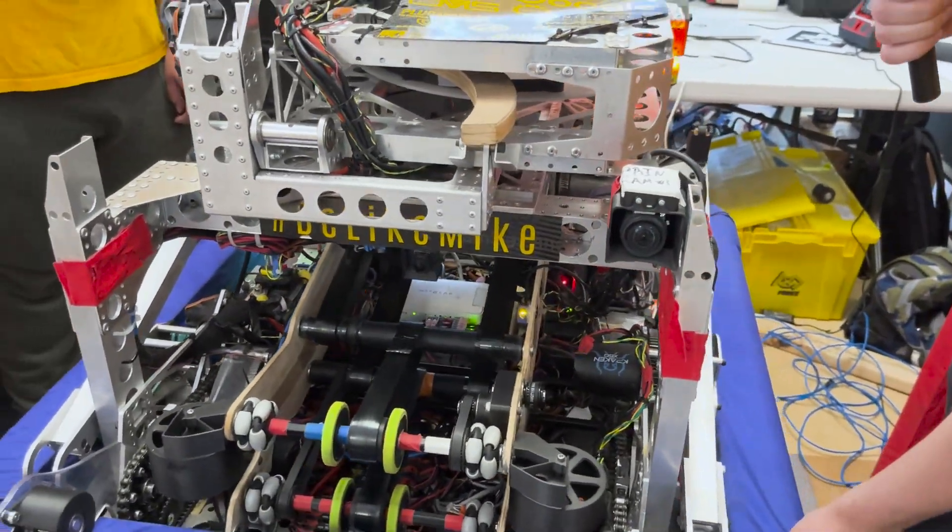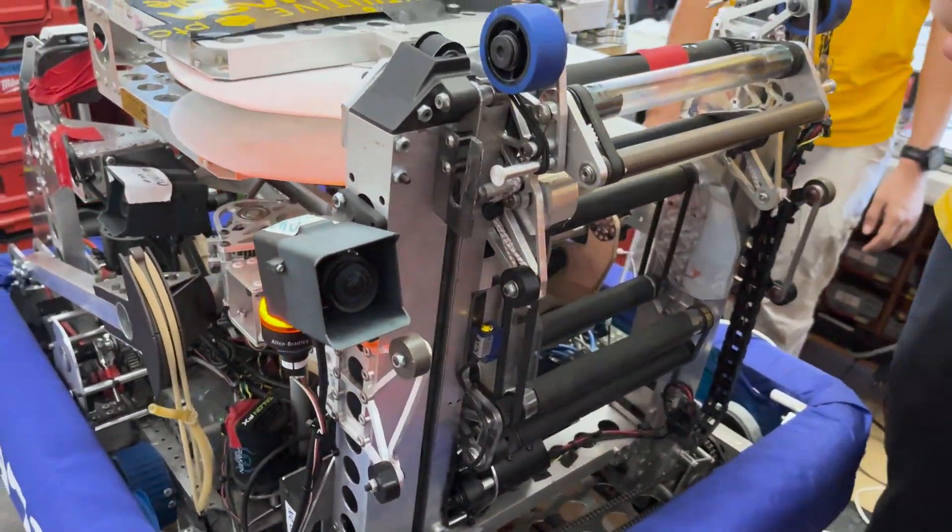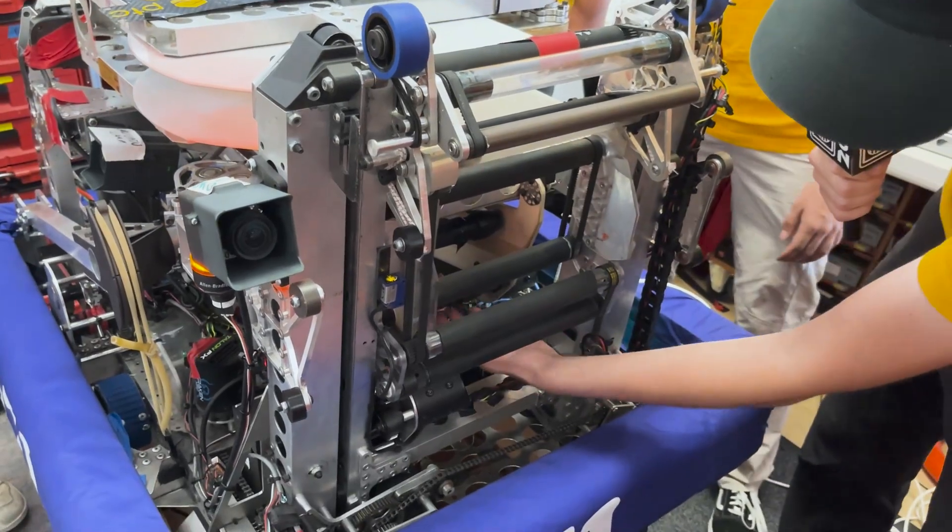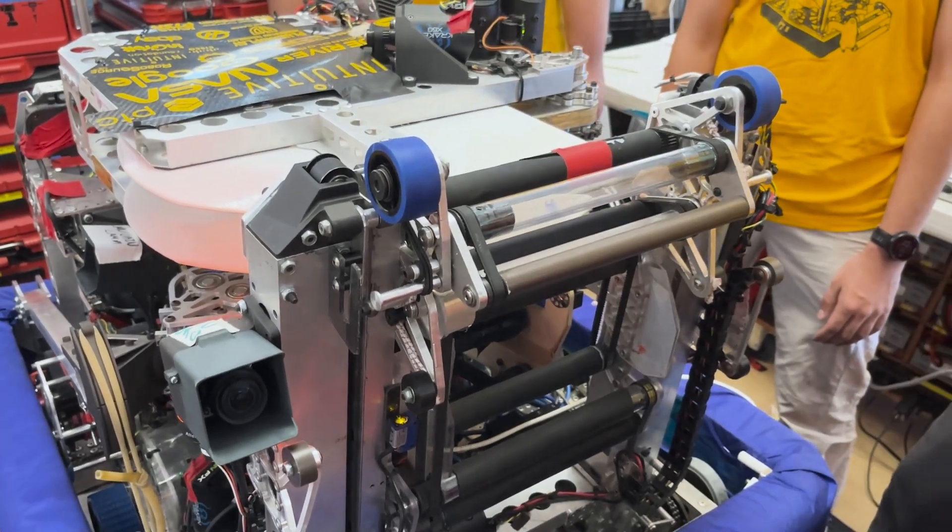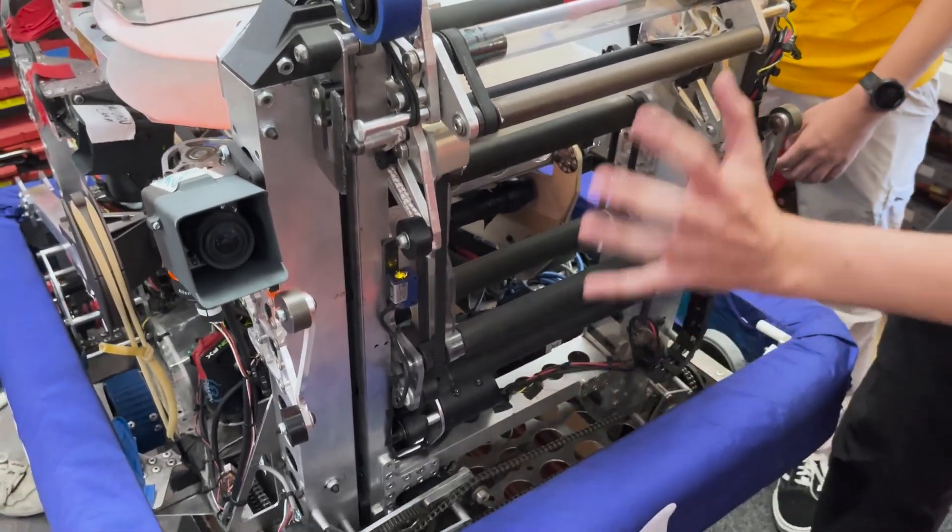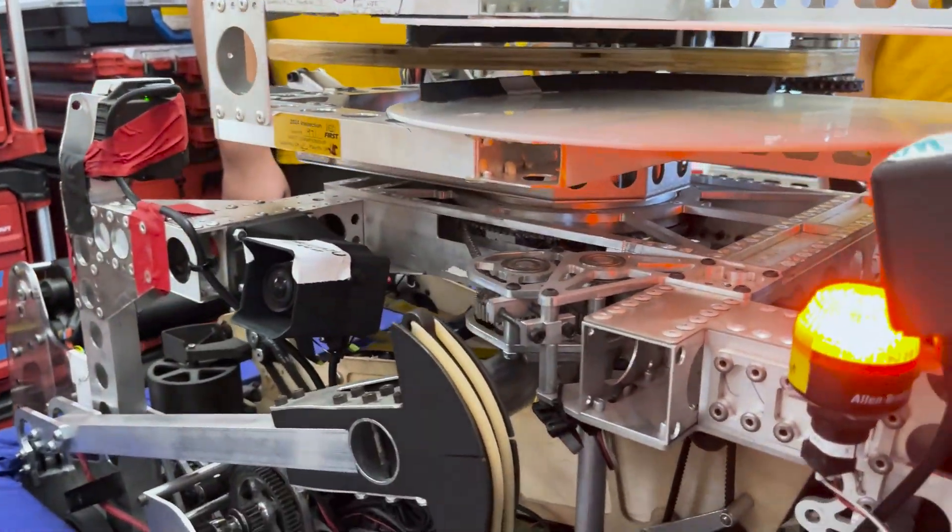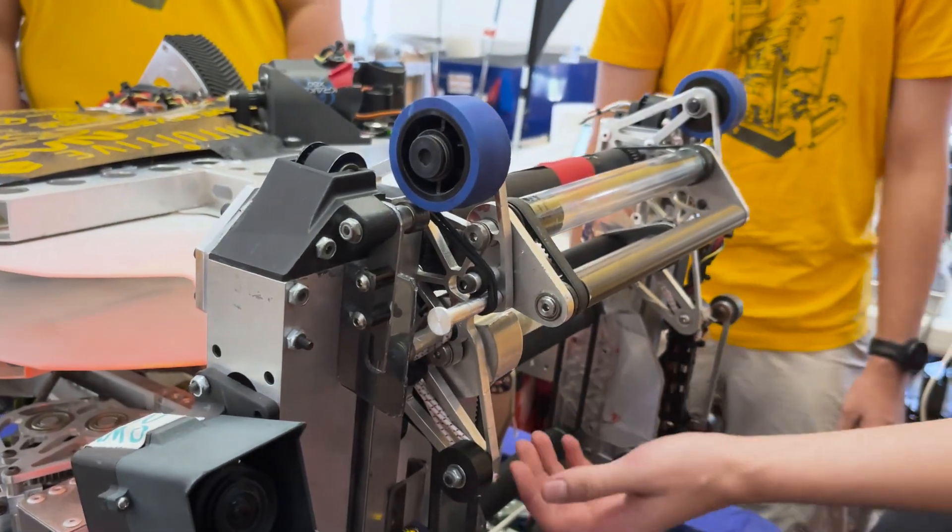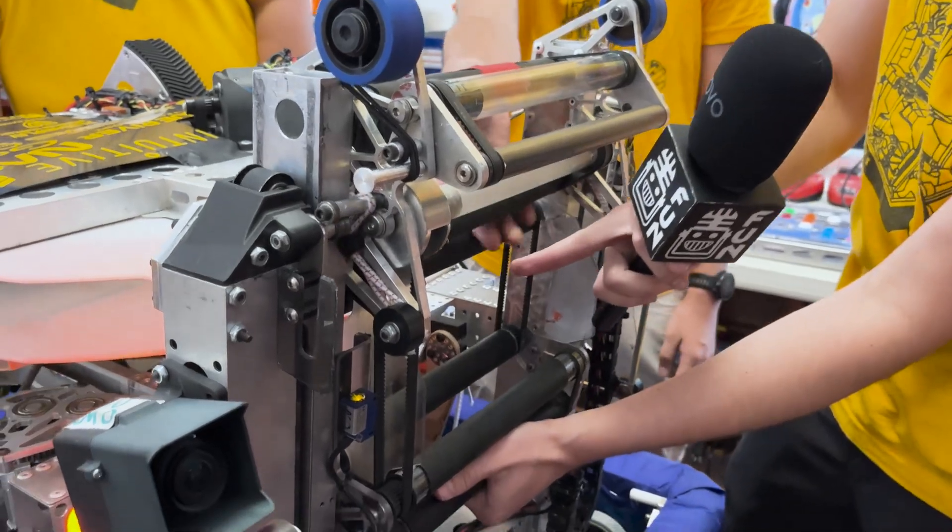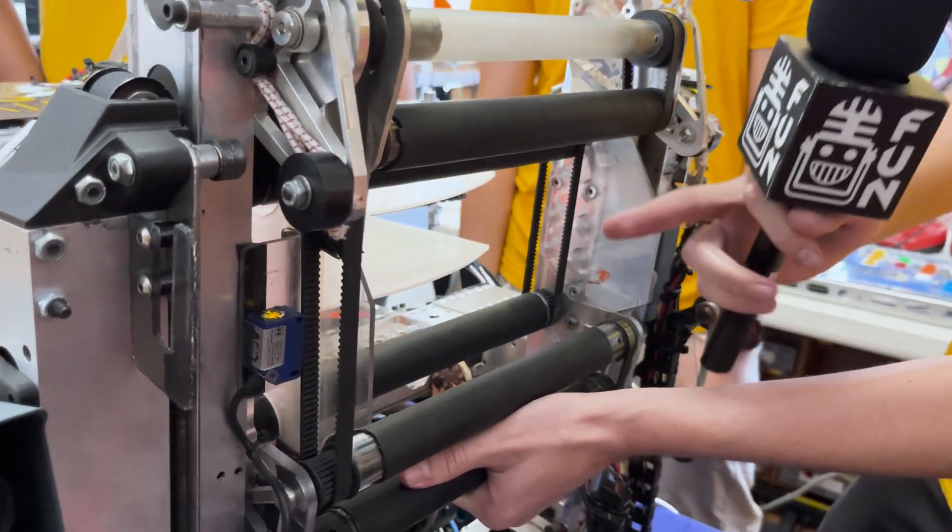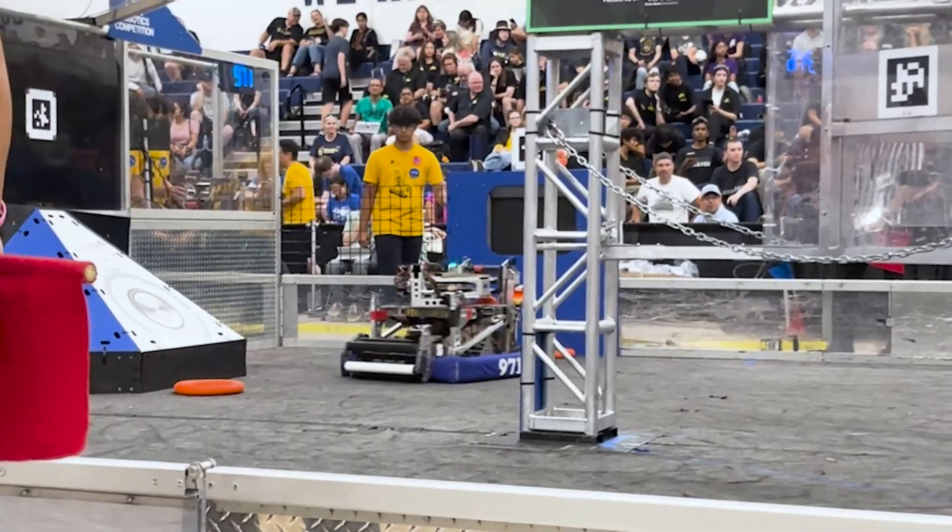Moving on to the back of the robot here, we have the extend. The extend is kind of one of the most important parts of this robot. The transfer will bring it to about here, and then our drive team will decide whether they want to do a speaker shot or an amp shot. If it wants a speaker shot, this will stay down and redirect the note into our shooting mechanism here. If we want to amp, this will come up and a passive dog will activate here. What that does is it redirects the motion of the note to come out this way and come down through here into the amp.